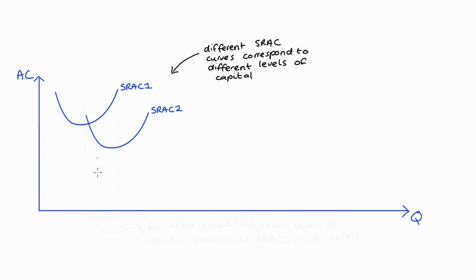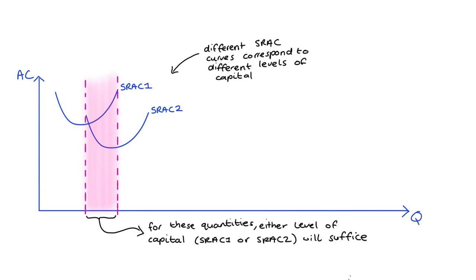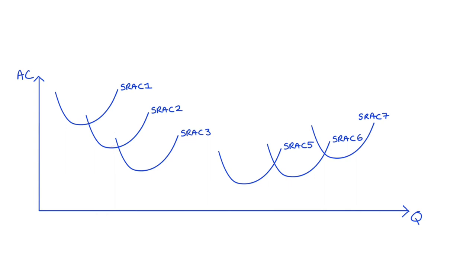One thing to note is that there is an overlap between these two curves for some quantities. If the firm chose to produce a quantity in that region, they could choose the capital level associated with SRAC1 or SRAC2 — either will suffice. Since there is a short-run average cost curve for every possible level of capital, we can fill out our whole diagram with different short-run average cost curves, all associated with different levels of capital. Let's pretend that eight curves represent all possible SRACs, and think about what the firm will do in the long run — this will tell us what the long-run average cost curve looks like.